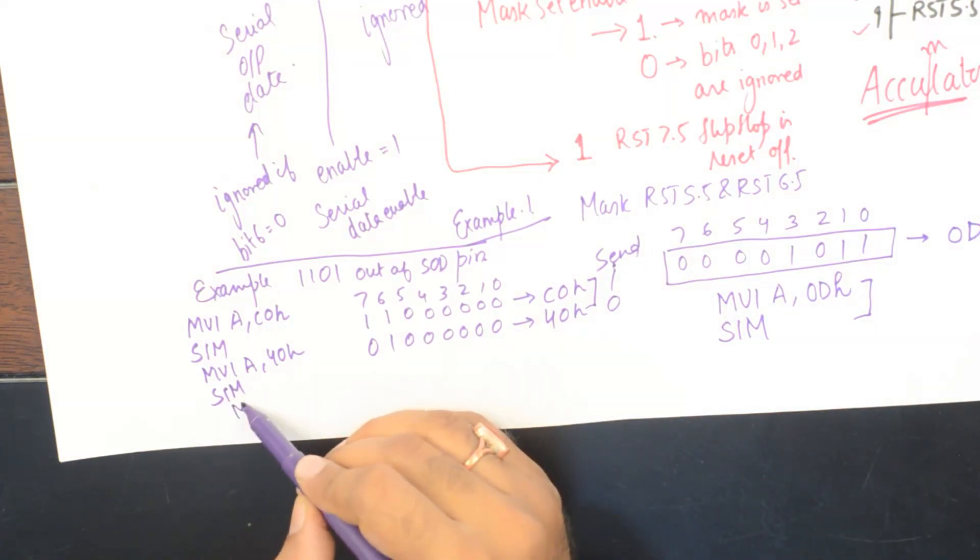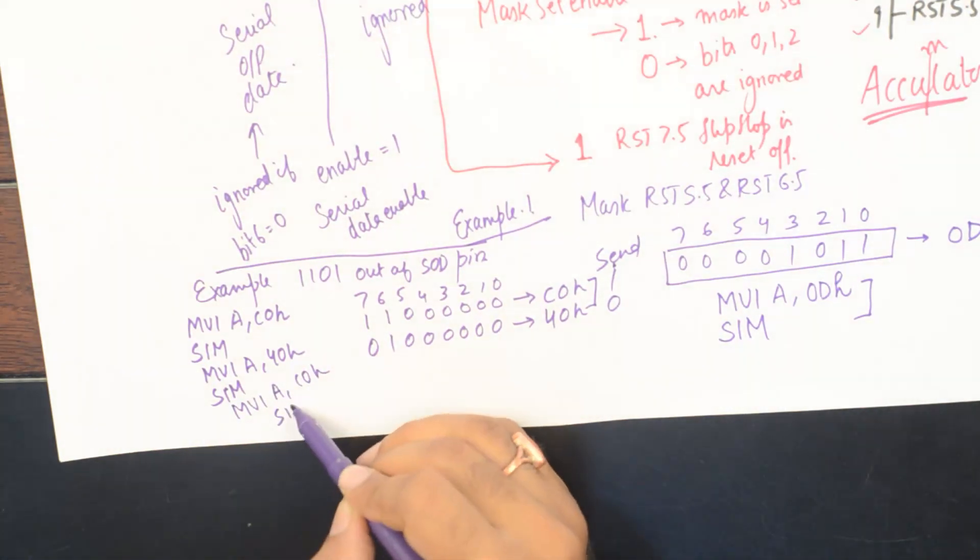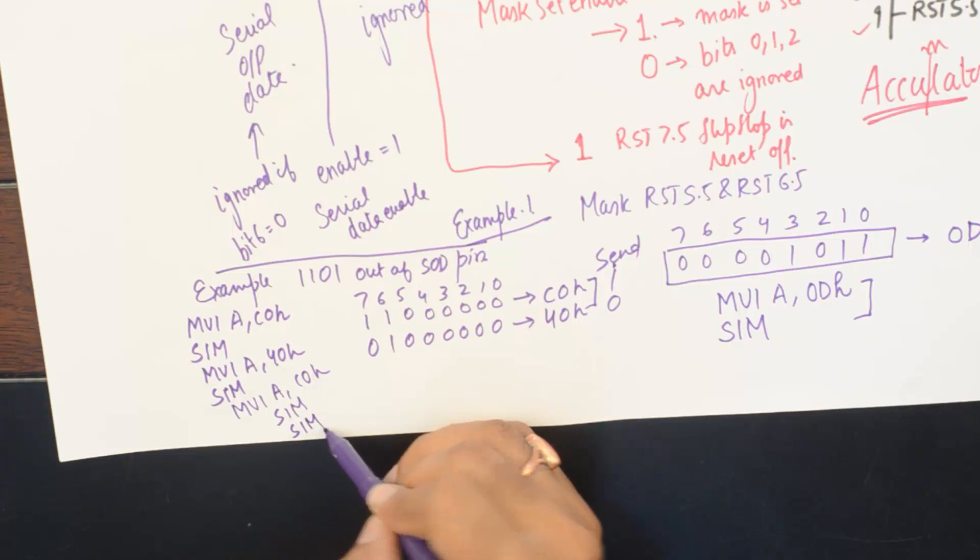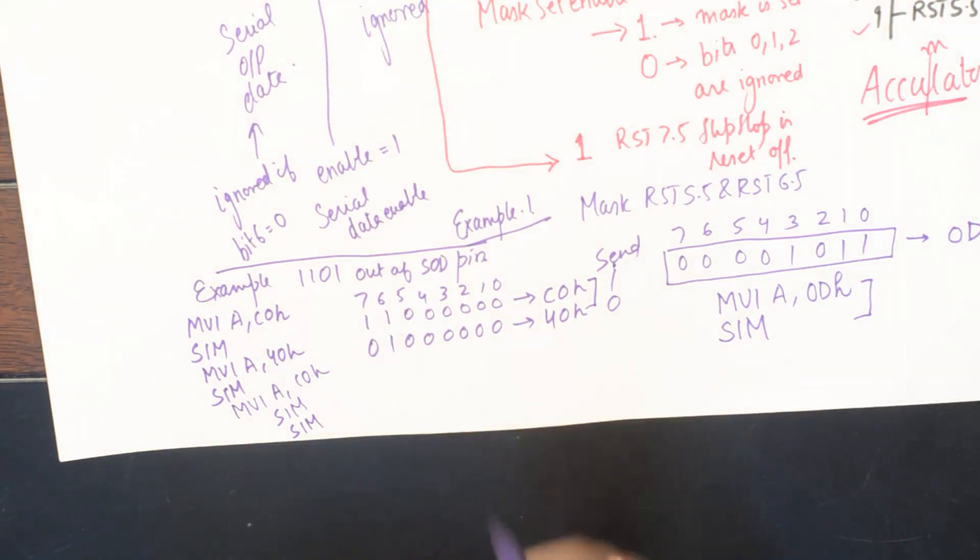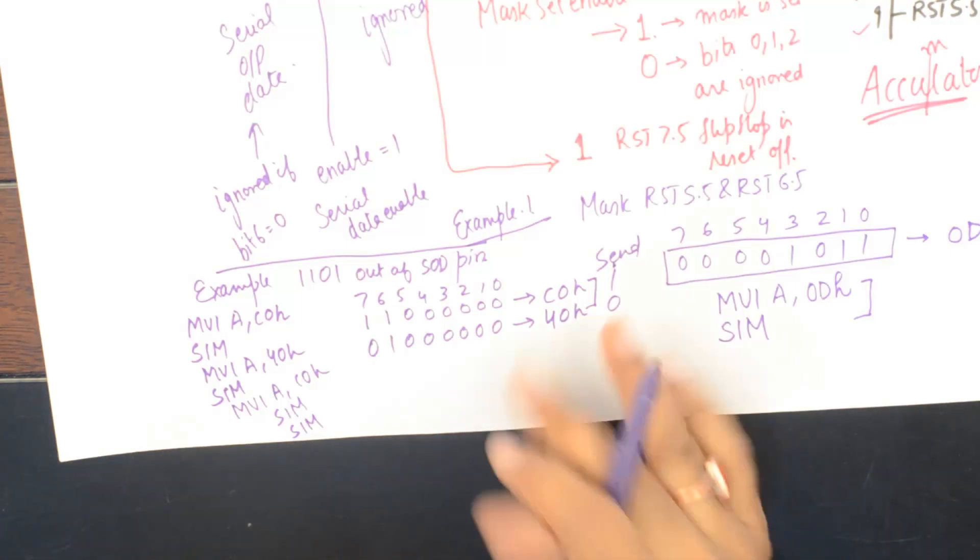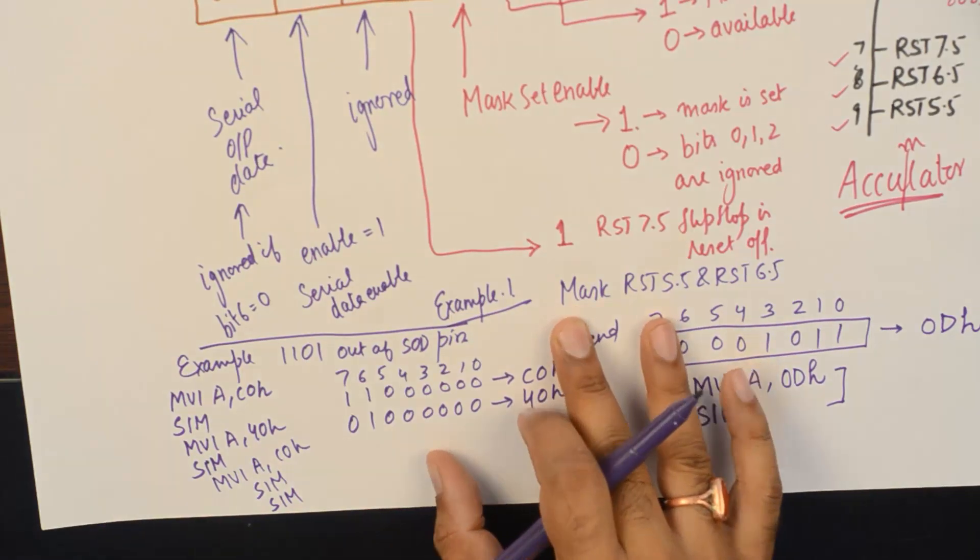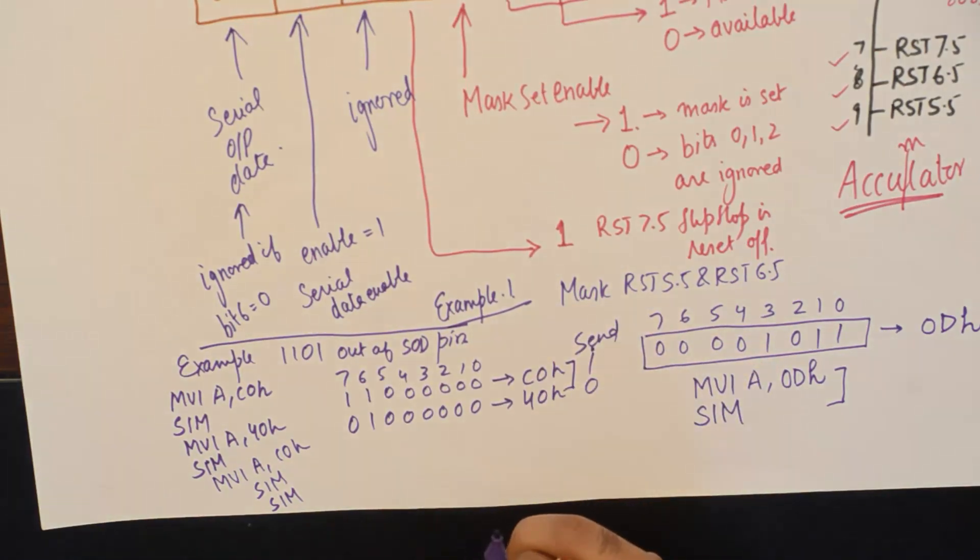Then you could move into accumulator C0H again and you can run SIM twice because you want to send 1 twice. That is how you can set your control on interrupts and do serial communication using this simple instruction SIM in 8085.